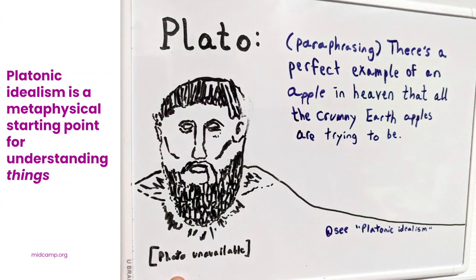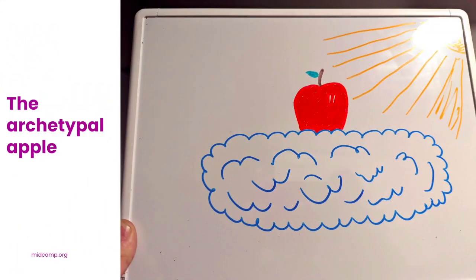This guy Plato — I'm paraphrasing here — said there's like this perfect example of an apple out in heaven that all the earth apples are just trying to be like. If you want to know more about that, you can Wikipedia Platonic Idealism or the Theory of Forms.